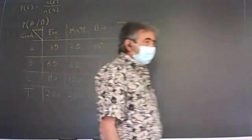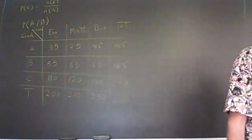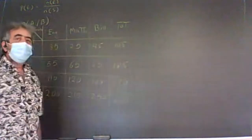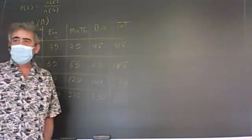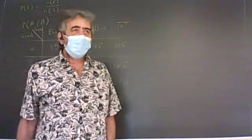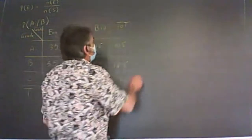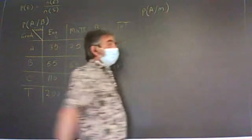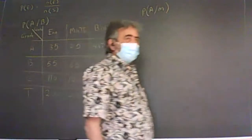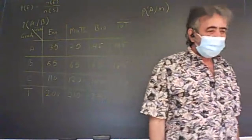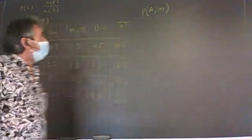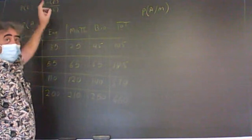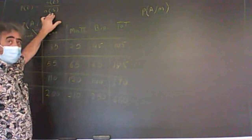Let's assume we saw a person from the college and we know that person is taking math. What's the probability that person got an A, knowing that he's taking a math class? To find the probability, we need to know the number of elements in the event, and we need to know what the sample space is.